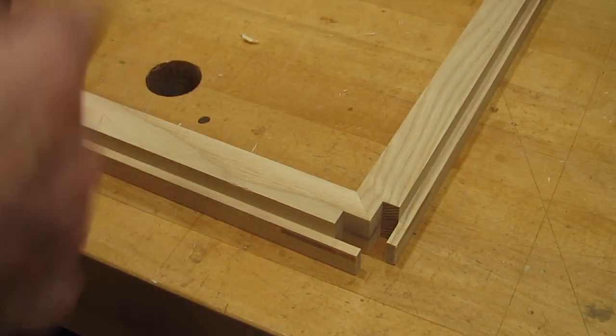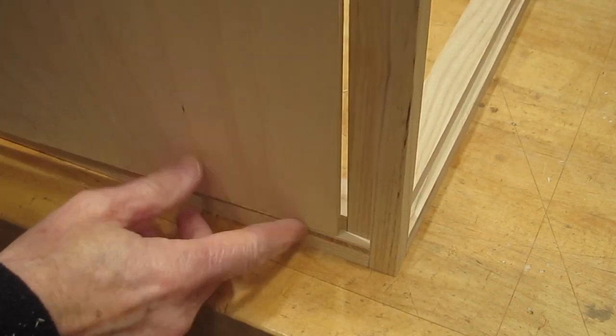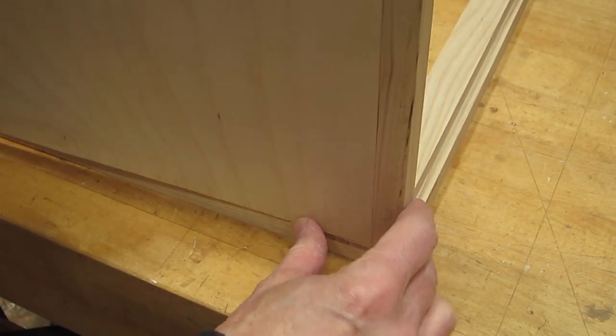With that rabbet cut on the table saw with the same blade, then there's a nice recess all around for the panel.